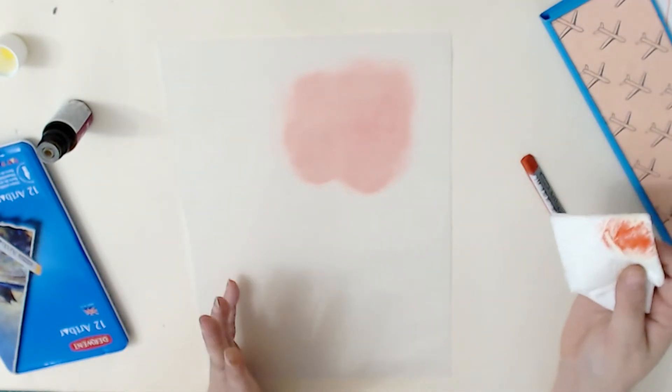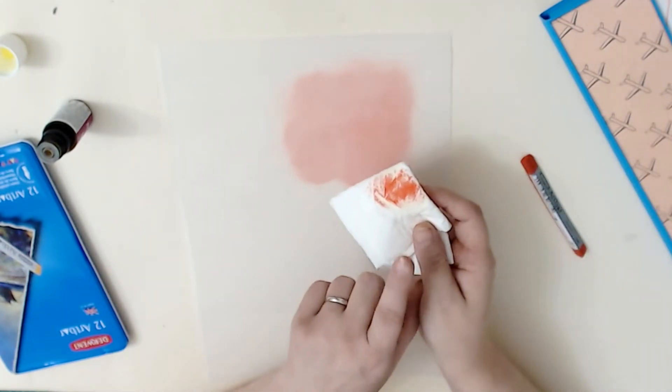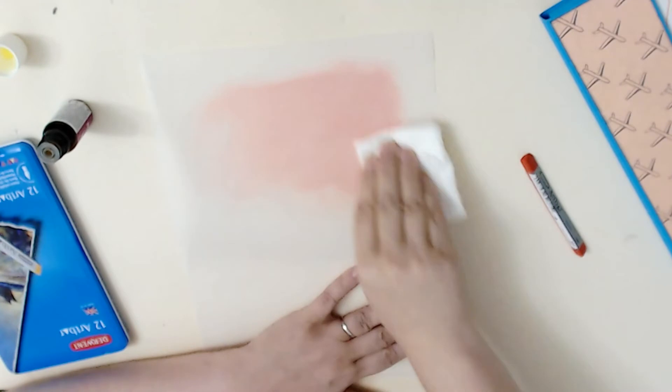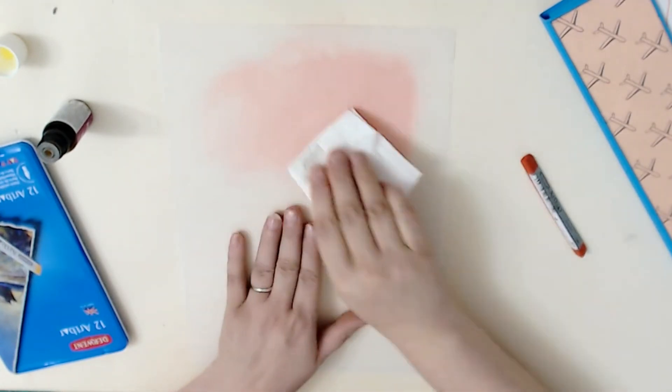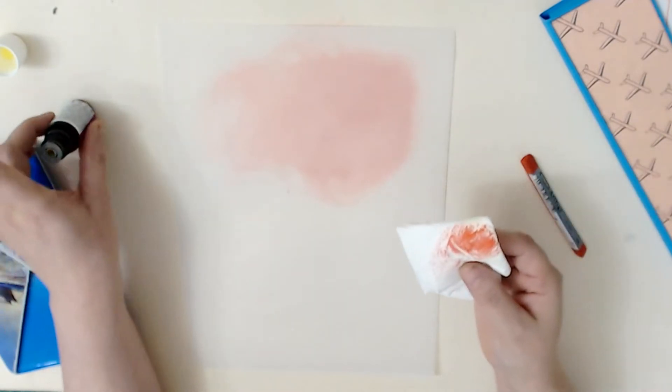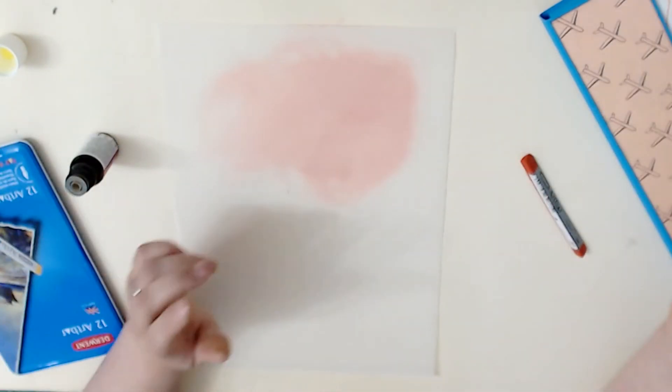Now if I've got this too dark, I don't like how dark it is, I can add even more oil and really rub it in. You can see if I spread it out, it's getting lighter. And if I add more oil, I can actually, if I use enough oil, I can take it all off as well.